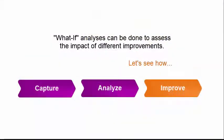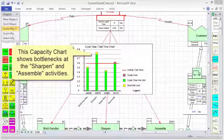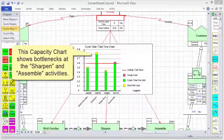What if analysis can be done to assess the impact of different improvements. Let's see how. This capacity chart shows bottlenecks at the sharpen and assemble activities.